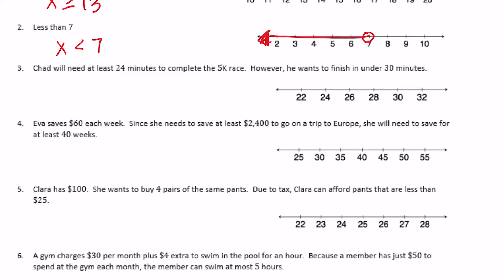Number 3. Chad will need at least 24 minutes to complete a 5k race. However, he wants to finish in under 30 minutes. So he needs at least 24 minutes, so between 24 minutes and it could be 24 exactly, he just needs at least 24 minutes. But he wants to finish in under 30, so not 30, he wants to finish less than 30. So anywhere in between there, so I keep that circle open because we don't want 30.